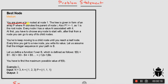Here's the problem statement. You're given a tree rooted at node 1. The tree is given in the form of an array P, where P[i] denotes the parent of node i — it's a kind of parent array. The parent of root node 1 is always minus 1 because it's the root node. Every node i has a value A[i] associated with it.